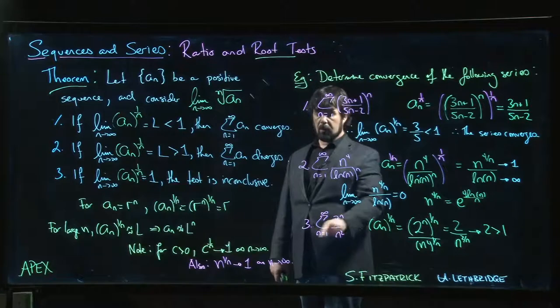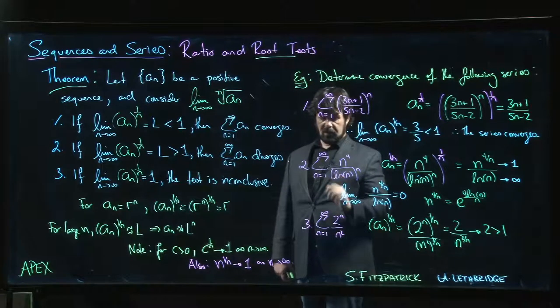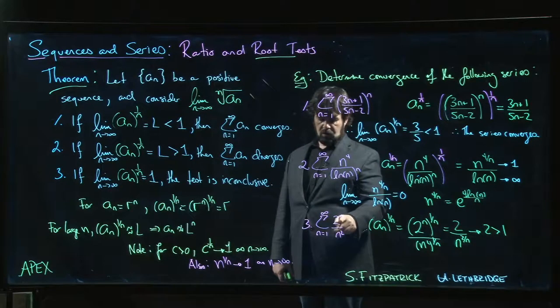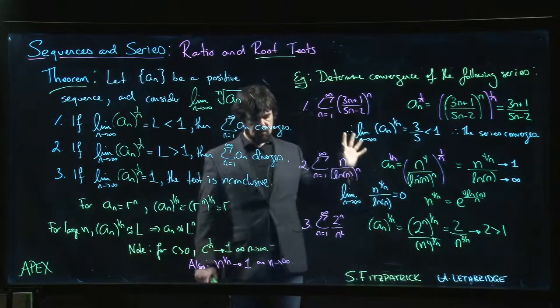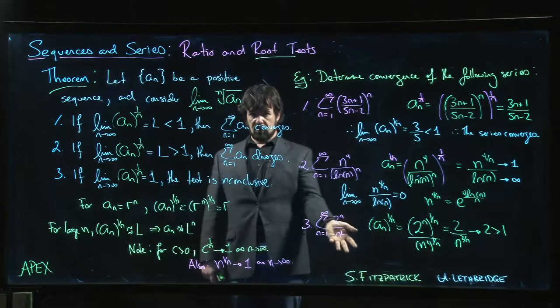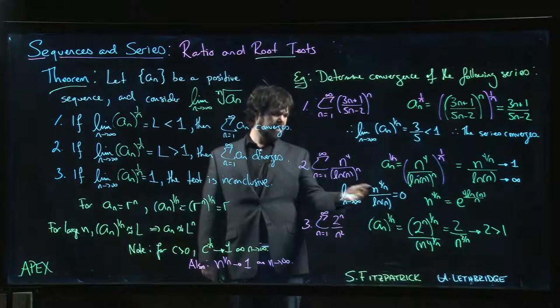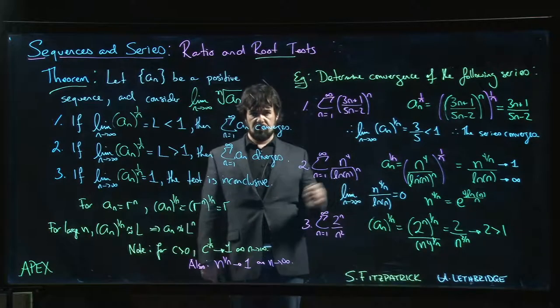Because if you take the limit of just the sequence as n goes to infinity, already you get infinity. 2 to the n grows a lot faster than n squared. The terms don't go to 0, end of story. You could also do the ratio test. Ratio test would be easy to apply here, but the root test also gets the job done.